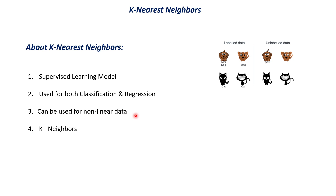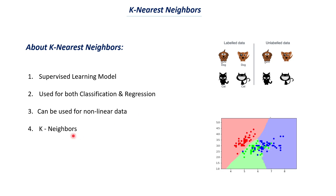The next important thing about k-nearest neighbor is that we have to define the K value. There are certain techniques we can follow to determine this K value, which we'll talk about later. For now, understand that KNN is a supervised learning model which can be used for both classification and regression, works with non-linear data, and requires assigning a K value. Let's now understand in more detail how KNN works and what this K value means.